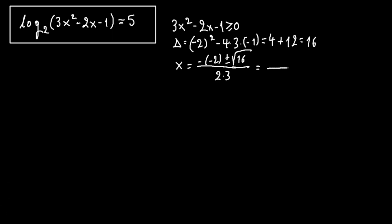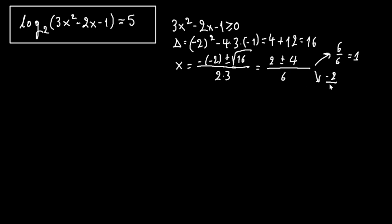This becomes 2 plus or minus the square root of 16, which is 4, over 6. Our solutions here are: the first one is 2 plus 4 equals 6, over 6, which equals 1. And the other one is 2 minus 4, which is minus 2 over 6, which equals minus 1 over 3.